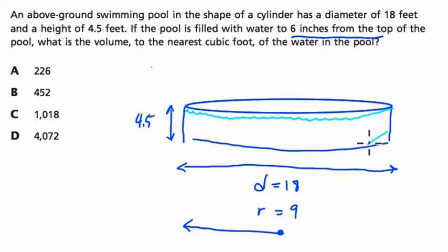So we want to find the volume of this water, right? This water has a height of 4 feet, but everything else is the same. The radius is 9.